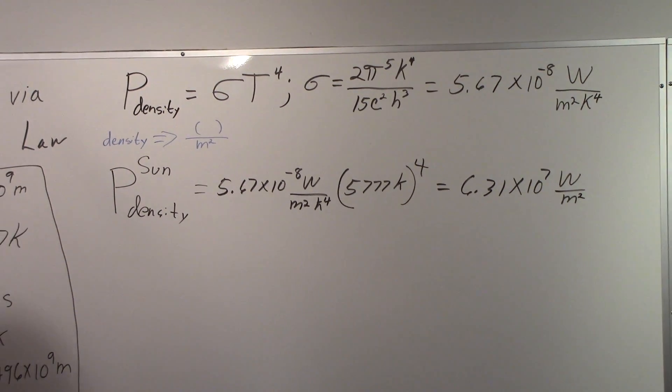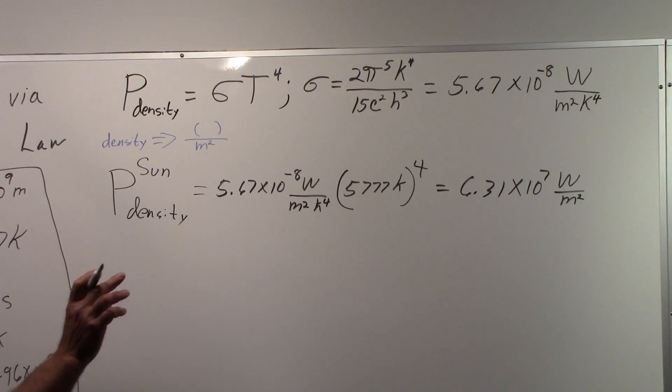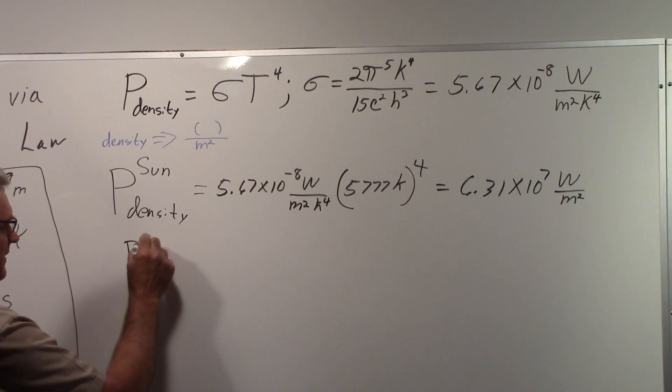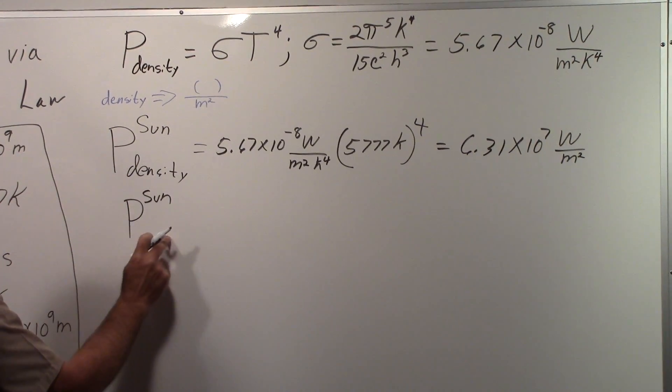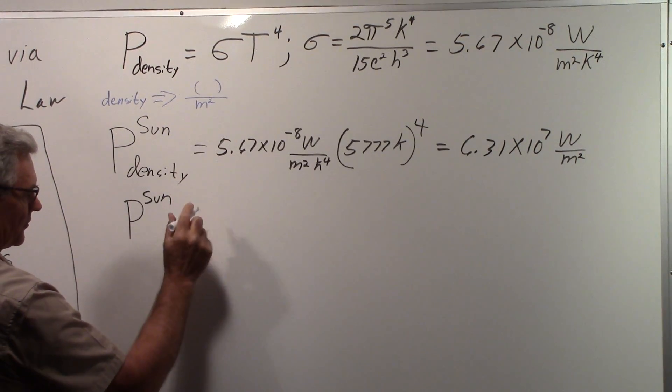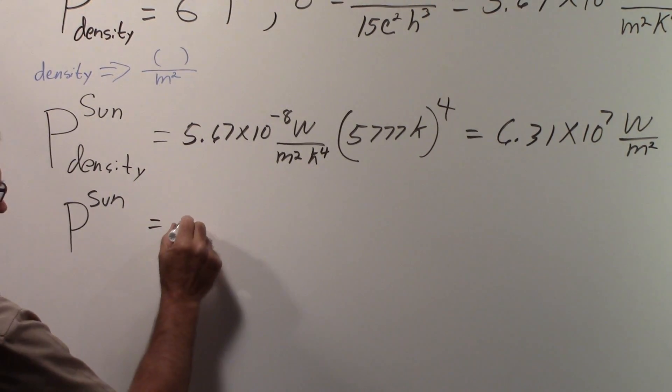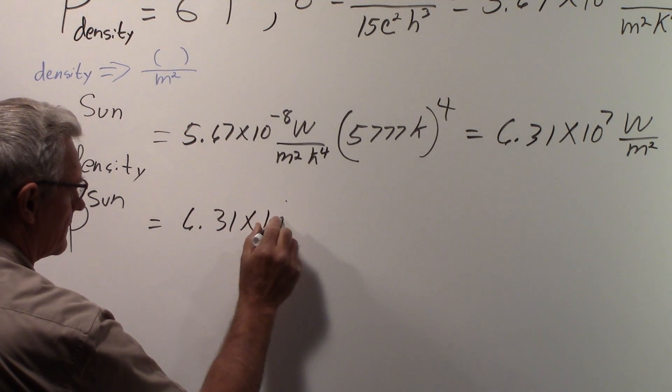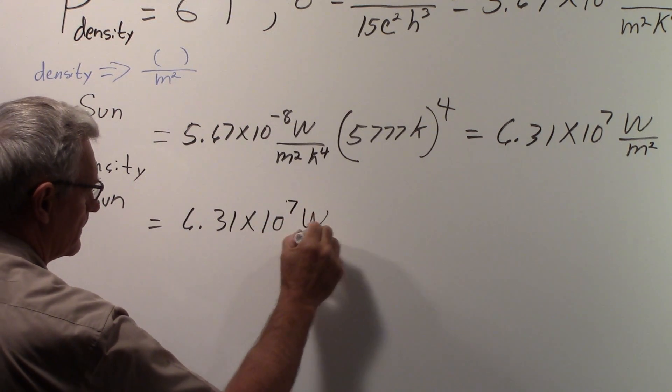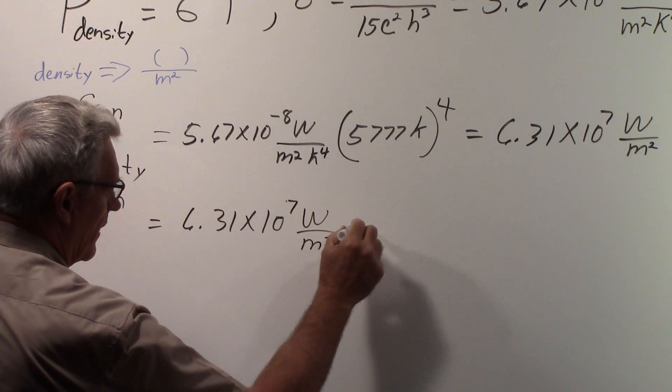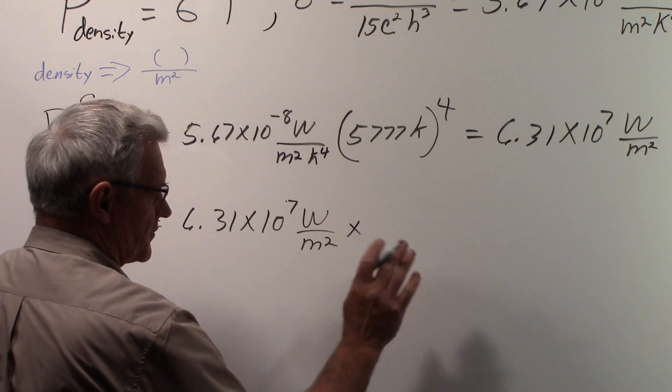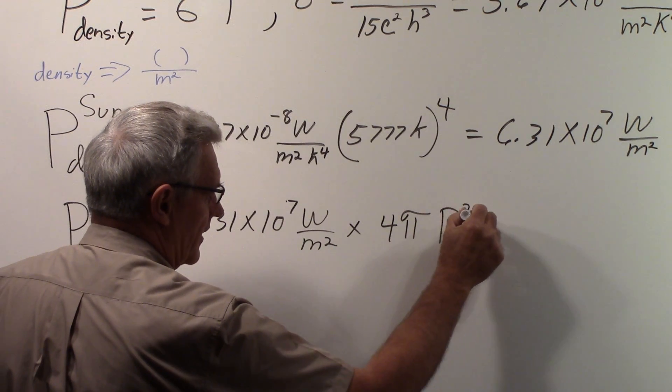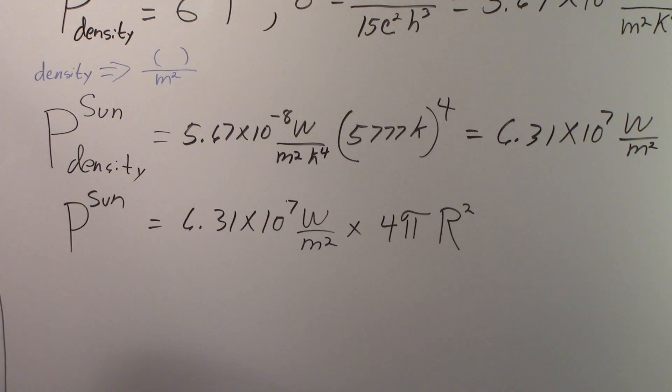We can now, since it's per square meter on the sun's surface, we can figure out the total power that's coming from the sun. We won't write the density down here now, we understand it to be total. So we take the value for each square meter and we multiply that times the surface area of the sun, which will be 4πr², where r is the radius of the sun.